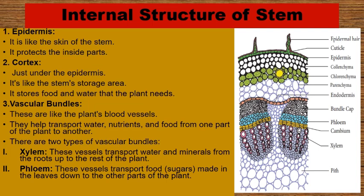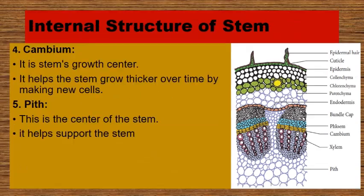3. Vascular Bundles — these are like the plant's blood vessels. They help transport water, nutrients, and food from one part of the plant to another. There are two types of vascular bundles: Xylem, which transports water and minerals from the roots up to the rest of the plant, and Phloem, which transports food and sugars made in the leaves down to the other parts of the plant. You can see the vascular bundle in the diagram shown here.